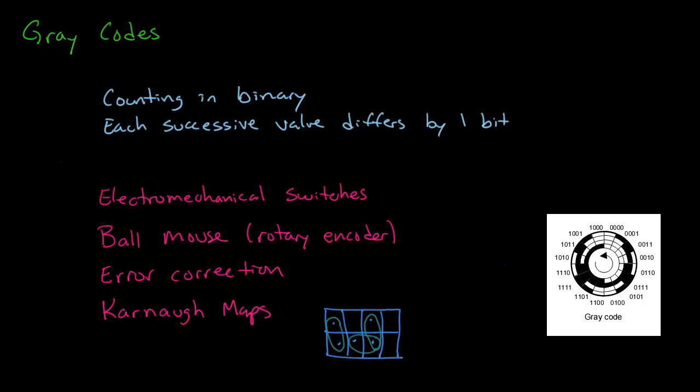We're going to talk about gray codes here. Gray codes are a way of counting in binary such that each successive value differs by one bit. That's different from regular counting in binary, in which each successive value could differ by more than one bit.